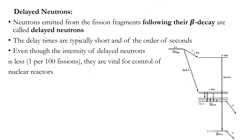Besides prompt neutrons, there is another kind of neutron emitted in nuclear fission. Neutrons emitted from fission fragments following their beta decay are called delayed neutrons. Their delay time is typically on the order of seconds, which is very large compared to the production time of prompt neutrons at 10⁻¹⁶ seconds.